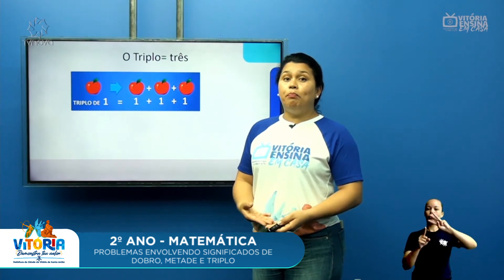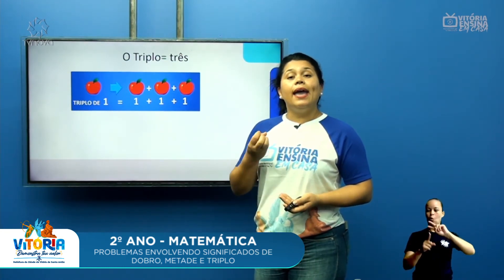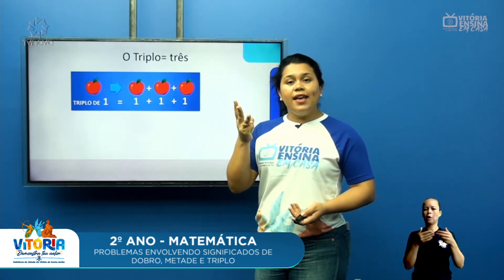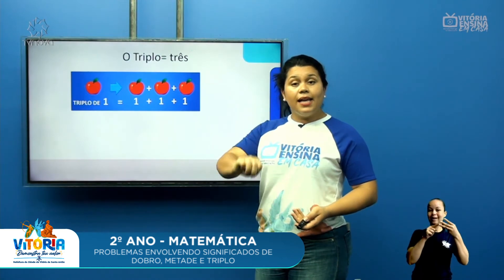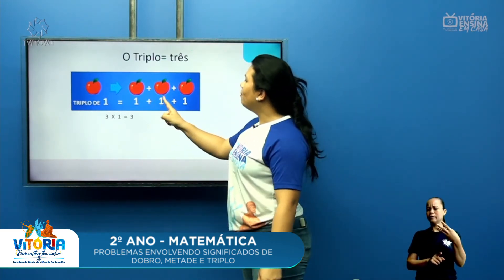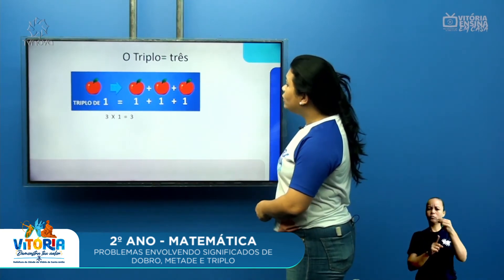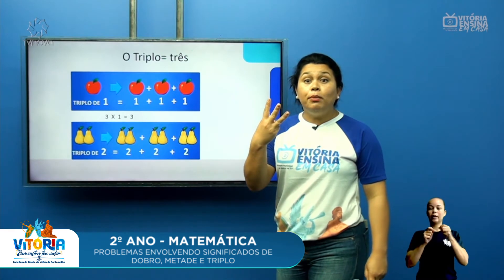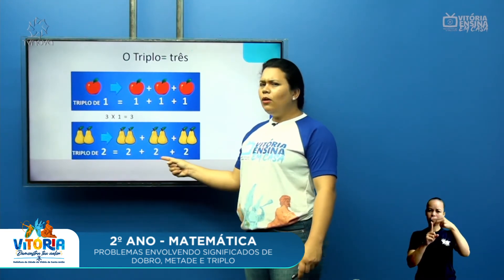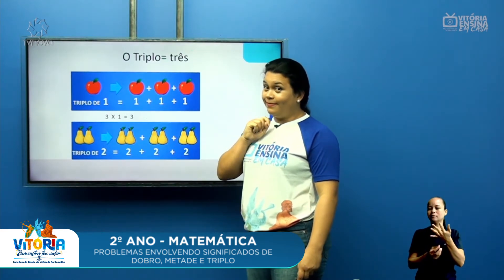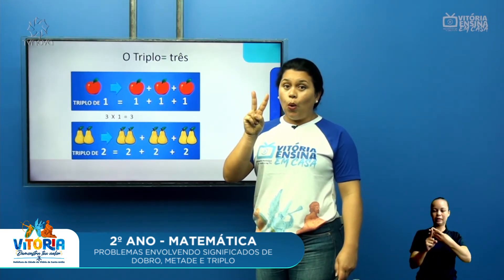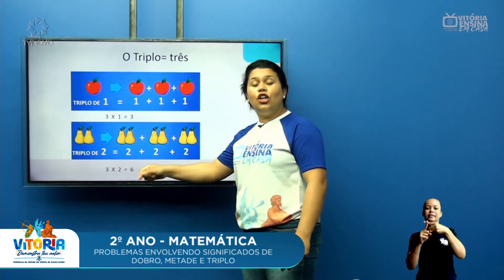Vamos agora para o triplo. O triplo é o quê? É o mesmo que três. O triplo de alguma coisa são três vezes. Eu quero aquele objeto três vezes. O triplo de um é três. Um mais um mais um, três. O triplo de dois é dois mais dois mais dois. Tem quantas peras aqui? Tem seis. O triplo de dois é três vezes dois, que é seis.